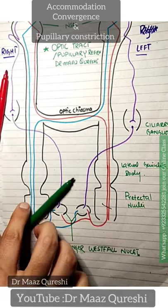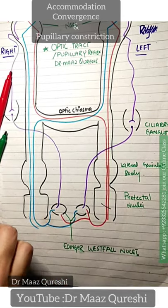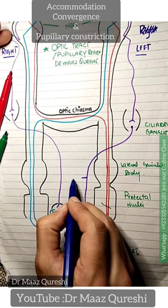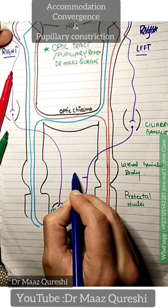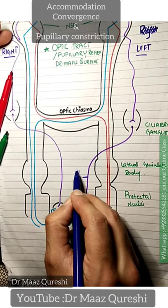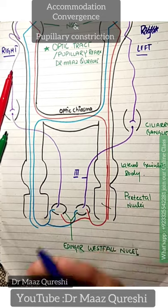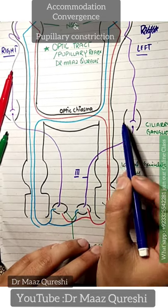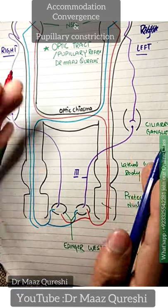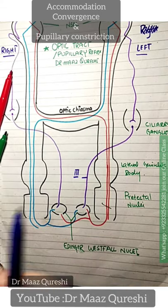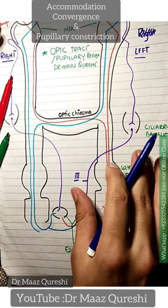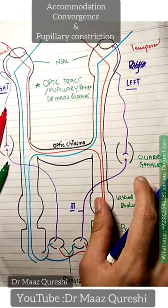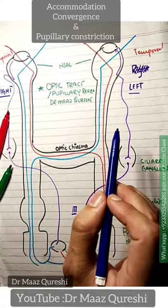This pre-synaptic is the occulomotor nerve — this is your occulomotor nerve which you can denote from the third nerve. Then you have the ciliary ganglion; it becomes post-synaptic and the post-synaptic fibers go to the suspensory ligaments.